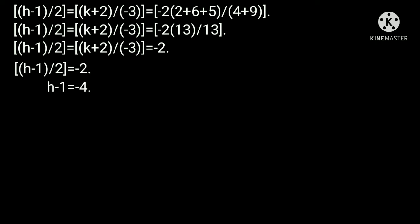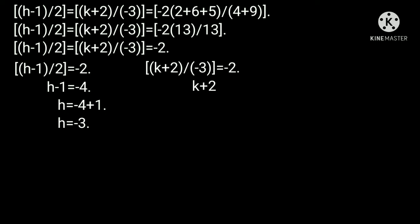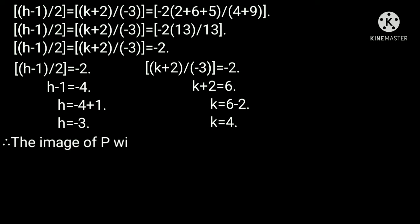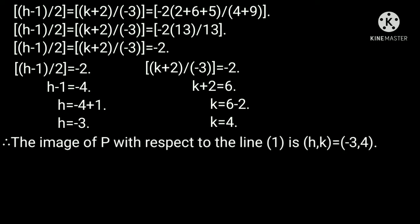From (h minus 1) by 2 equal to minus 2: h minus 1 equal to minus 4, so h equal to minus 3. And from (k plus 2) by minus 3 equal to minus 2: k plus 2 equal to 6, so k equal to 4. Therefore the image of P with respect to line 1 is (h, k) equal to (-3, 4). This is our required problem solution.